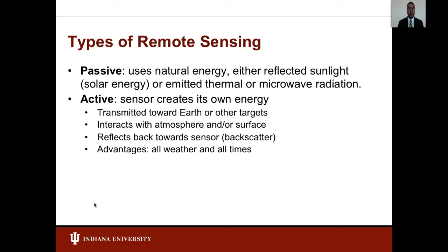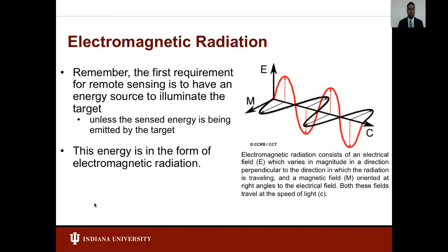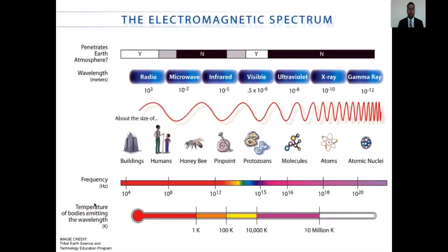Active sensors require large amounts of energy to adequately illuminate targets. Remote sensing requires a source to illuminate a target, and this form of energy is electromagnetic radiation. It consists of an electrical field which varies in magnitude in a direction perpendicular to the direction of travel, while the magnetic field is oriented at right angles to the electrical field. Both fields travel at the speed of light. The electromagnetic spectrum ranges from shorter wavelengths, including gamma and x-rays, to longer wavelengths, including microwaves and broadcast radio waves.